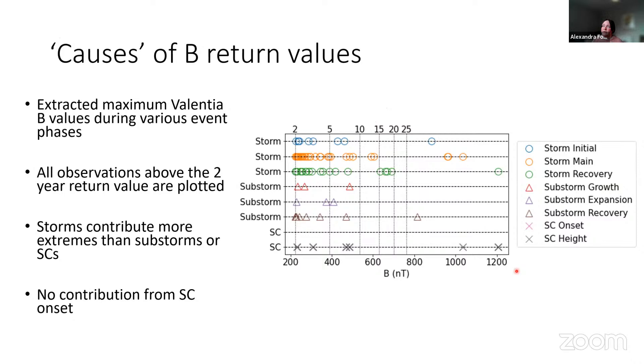So then, as I alluded to, we're going to discuss the causes of the B return values, so the causes of those extremes that we're seeing. So what I've done is used three event lists, a storm event list, a substorm event list and a sudden commencement event list, separated them into different phases. And then what I've done is extracted the maximum Valencia B observation during each of these phases. And then they are plotted only if they exceed the two-year return value, which was 222. So what we can see is that storms are contributing far more extremes than substorms or sudden commencements. And actually, there's no contribution from sudden commencement onset. But that is the bottom of the step change. If you think of the sudden commencement in the magnetometer data as a step change, particularly at the equator, the bottom of the step change is where we're going to have the smallest B. So it's not surprising that there's no contribution from sudden commencement onset in this case.